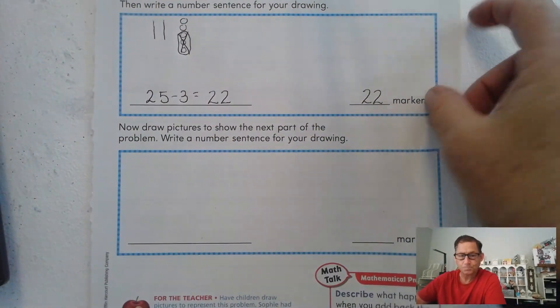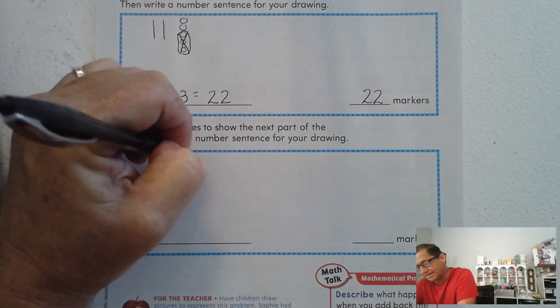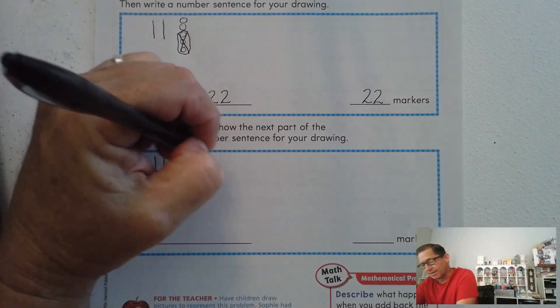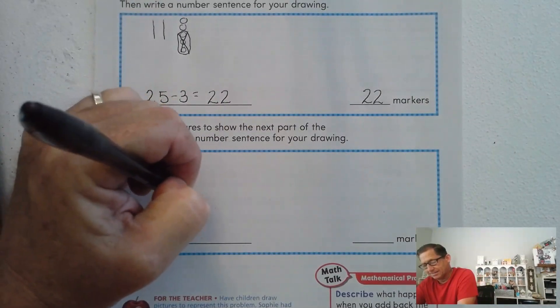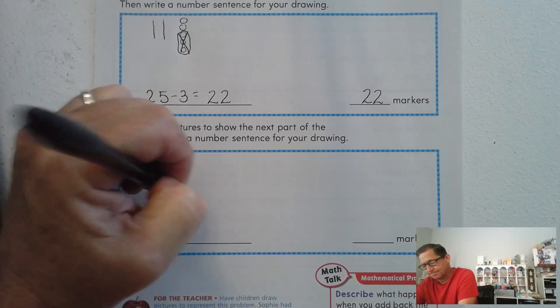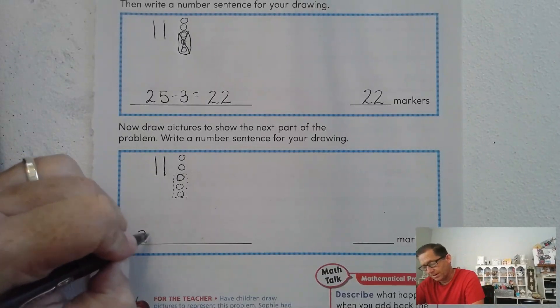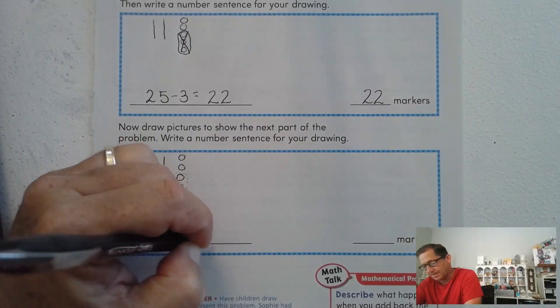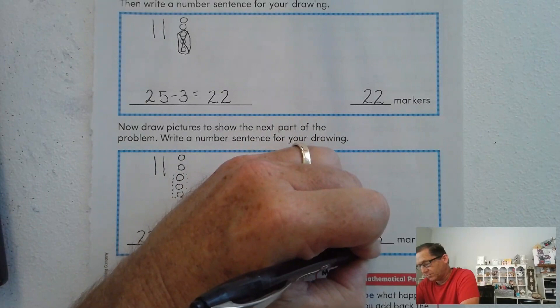So we know that she has 22, right? And if Josh gives those three back to her, we'll just add three. So our number sentence would be 22 plus 3 equals 25. So she would have 25 markers again.